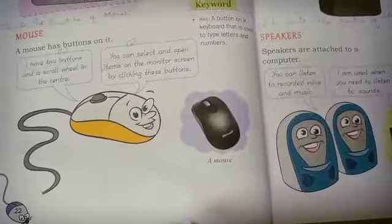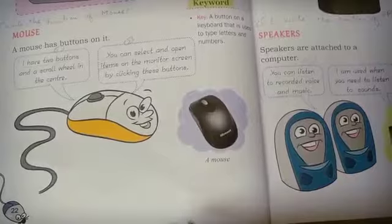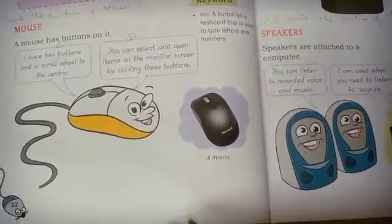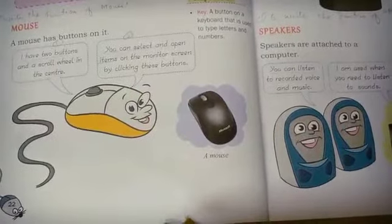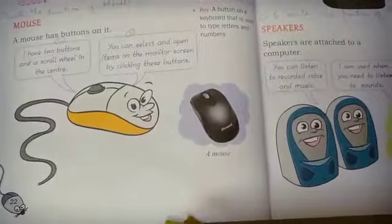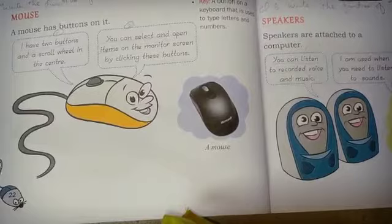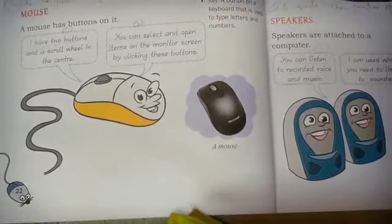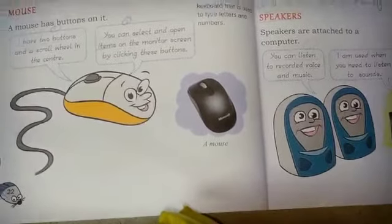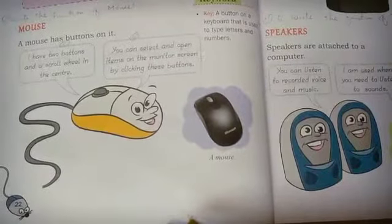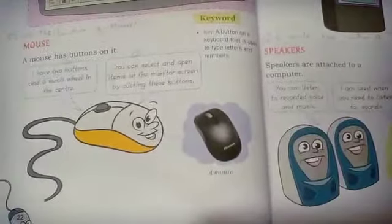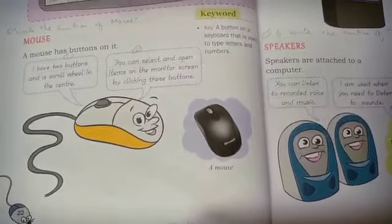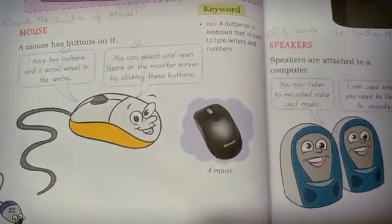Assalamu alaikum and good morning students. It's your computer class for grade one. Hope you all are fine. In previous chapter, students, we have learned about some parts of computer, for example monitor and keyboard. Now in this class we are going to learn about the parts of computer: mouse, CPU box, speakers, and printer.